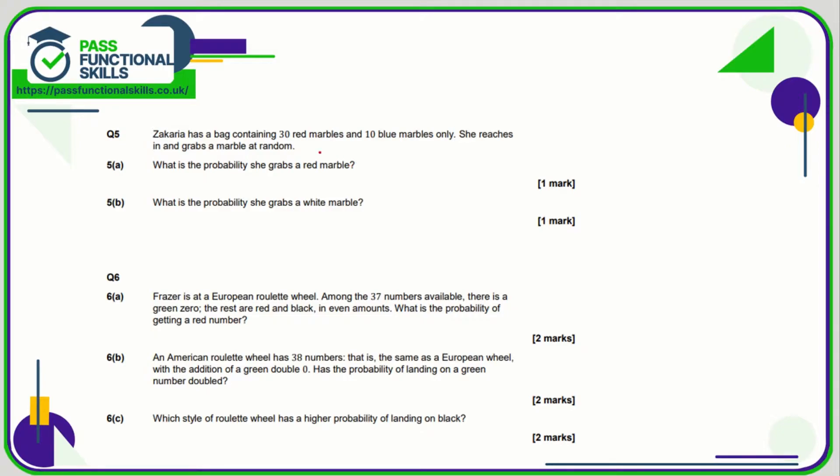Question number five: So we know that in total Zacharia has got 40 marbles in total. So the probability of grabbing a red is 30 out of the 40, which can be broken down to three quarters.